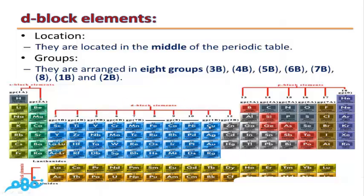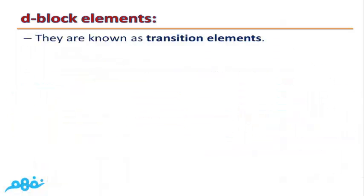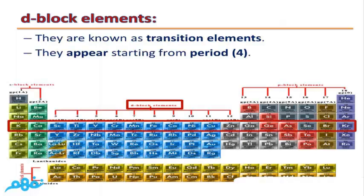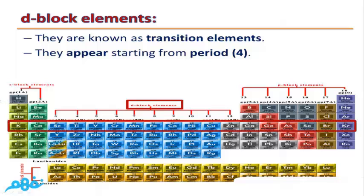D block elements contain groups 1B through 2B — they are eight groups but arranged in ten vertical columns. D block elements are also called transition elements, and they start to appear from period four. We don't have d block elements in periods one, two, or three; they start appearing from period four.